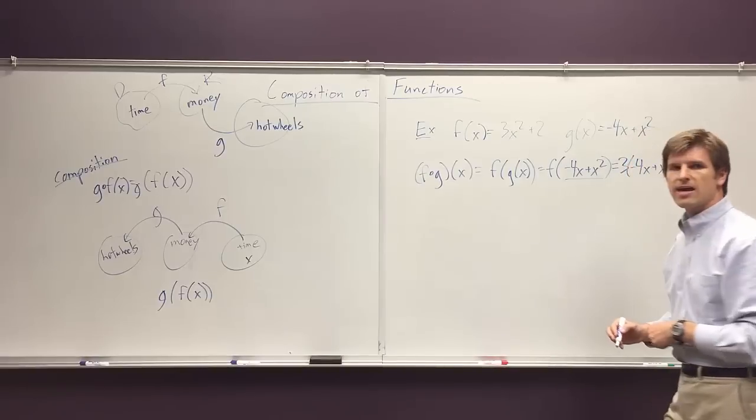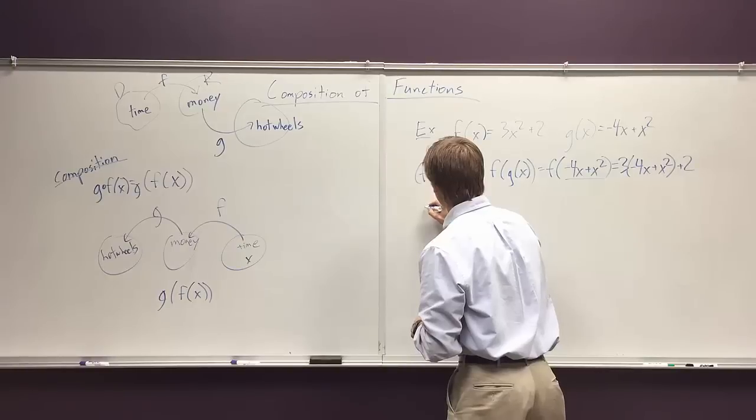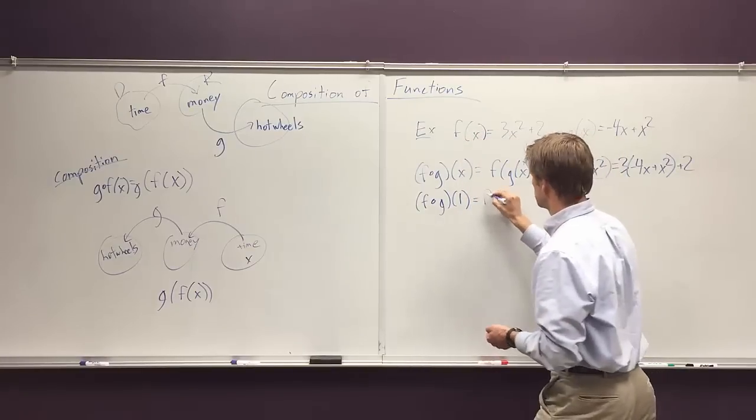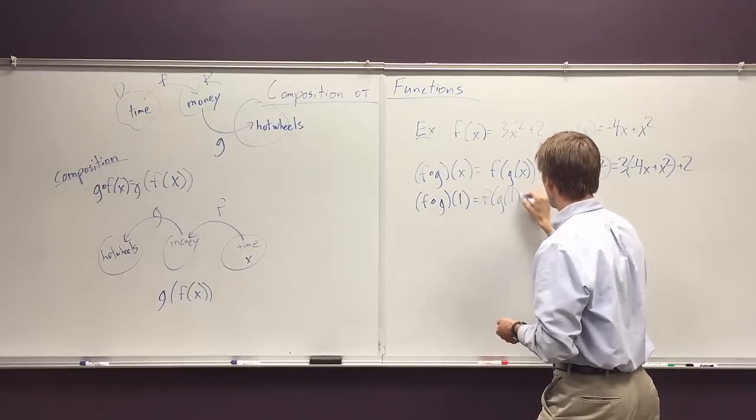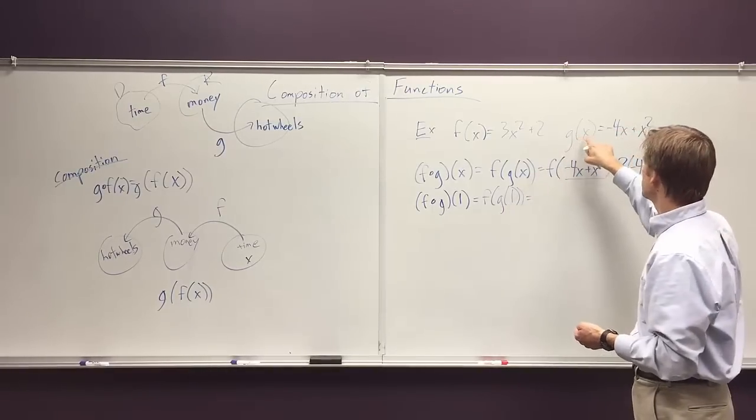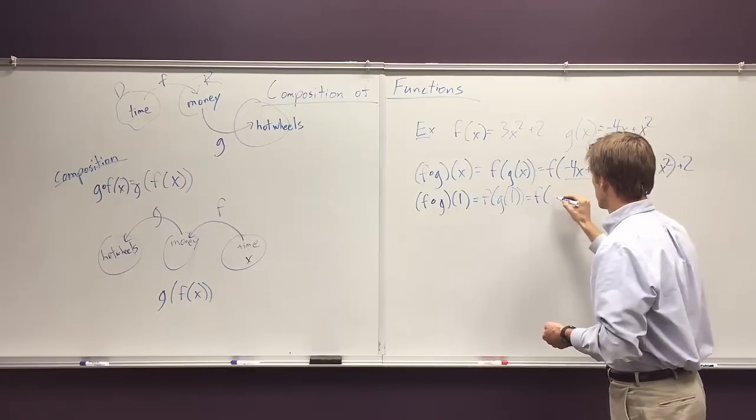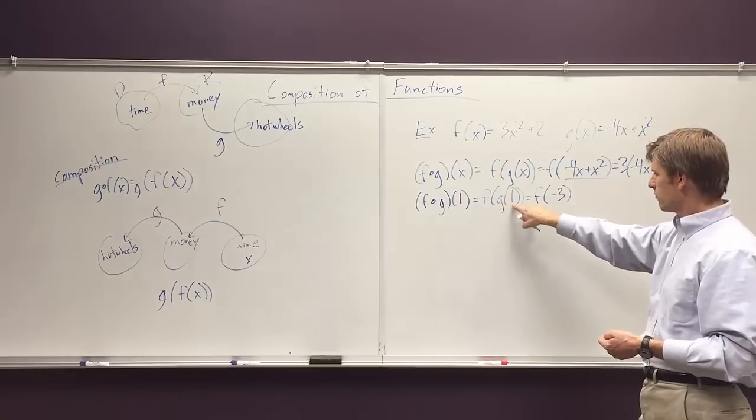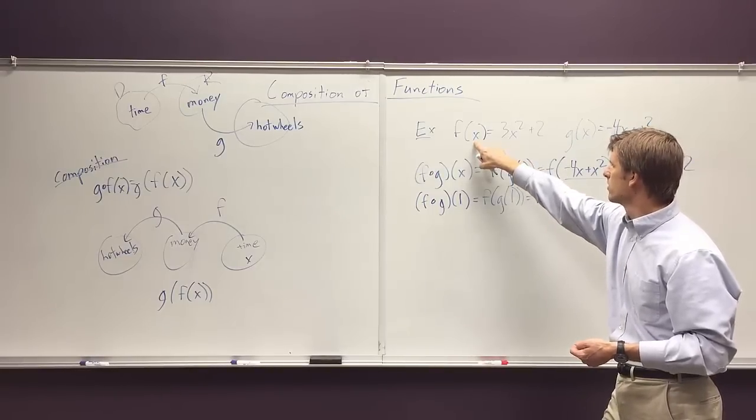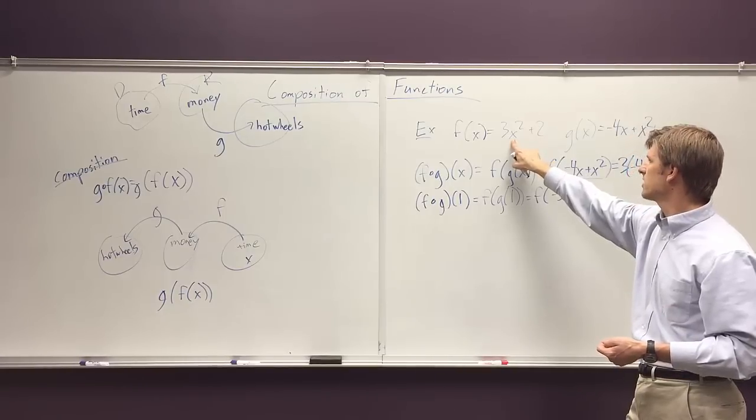You could also do the same thing with a number. So let's do f composed with g of 1. f composed with g is f of g of 1. What's that mean? We calculate what g of 1 is. Well g of 1 is negative 4 plus 1, so that's negative 3. Since g of 1 is equal to negative 3, we're left with what is f of negative 3. We'll plug in negative 3 here, and you might want to do this calculation out by yourself, but that's 27 plus 2 which is 29.